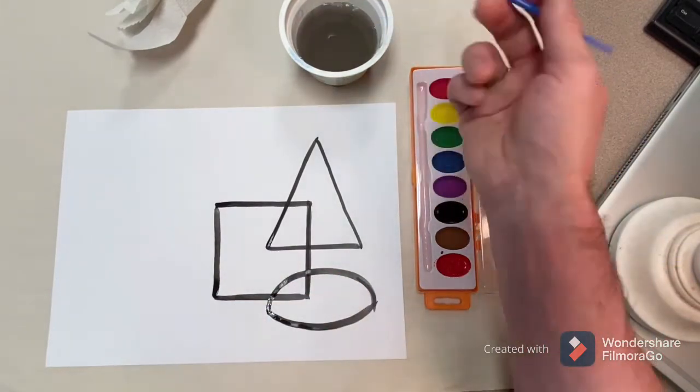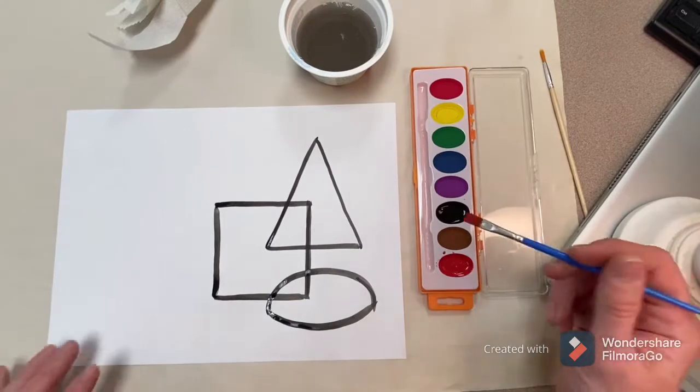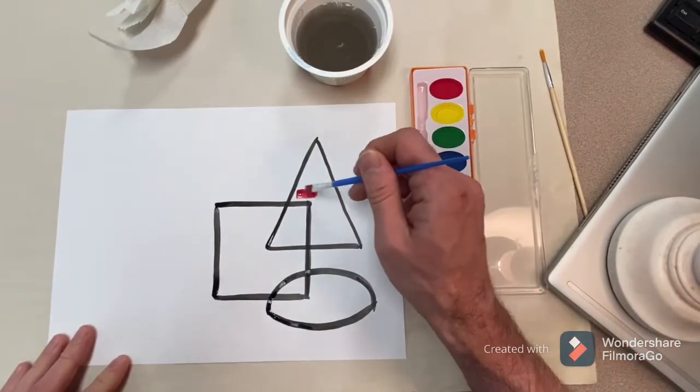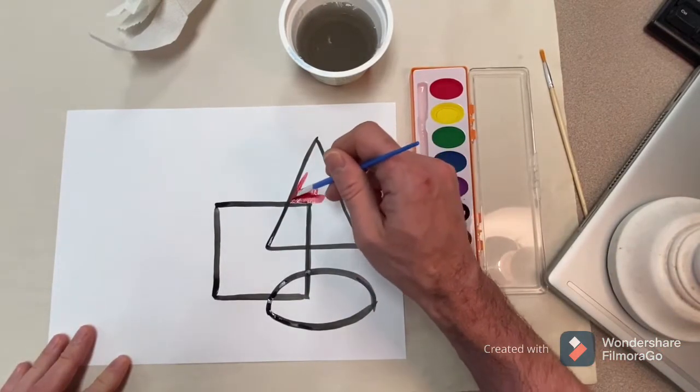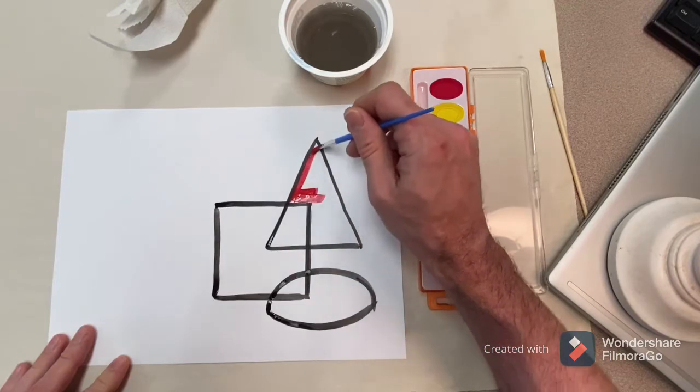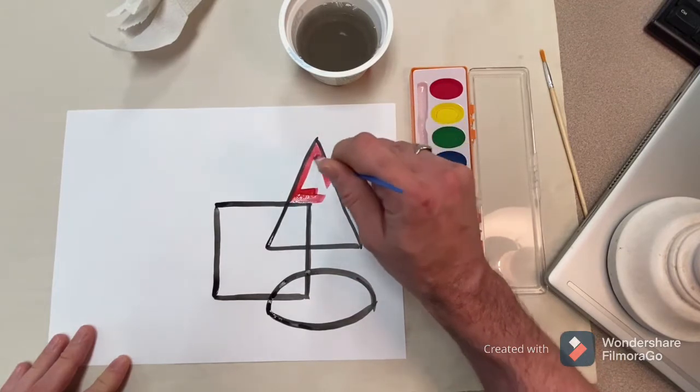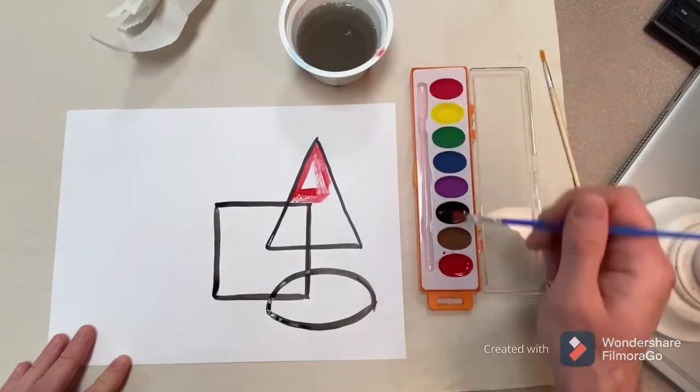You don't need a ton of water either. Just a little bit of water on your brush should do the trick. I'm gonna start painting my triangle in. Oh, that's a nice vibrant red. If yours is coming out like a light pink, you probably just gotta swirl your brush more. Get a little more water on there.